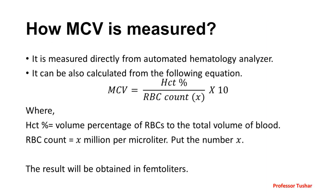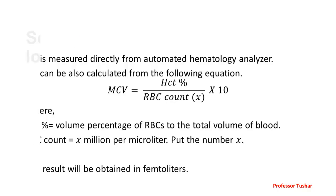MCV is measured directly from an automated hematology analyzer. It can also be calculated from the following equation: MCV equals HCT percentage divided by RBC count, and the whole is multiplied by 10. Where HCT percentage is the volume percentage of RBCs to the total volume of blood, and RBC count is X million per microliter — only put the number X in the equation. The result will be obtained in femtoliters.